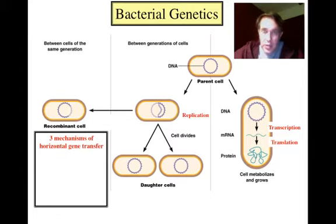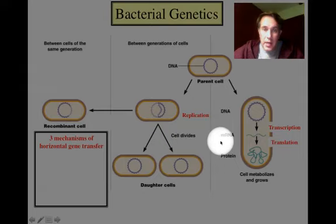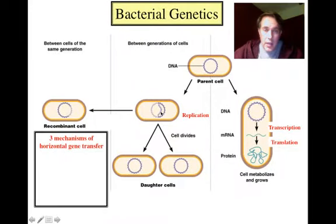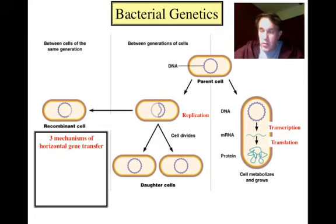We also talk about the genetics of when cells replicate. When a cell has its chromosome and makes a copy of it, that copy gets passed on to the two daughter cells through the process of binary fission. That passing of genetic material is referred to as vertical gene transfer — from one generation to the next.